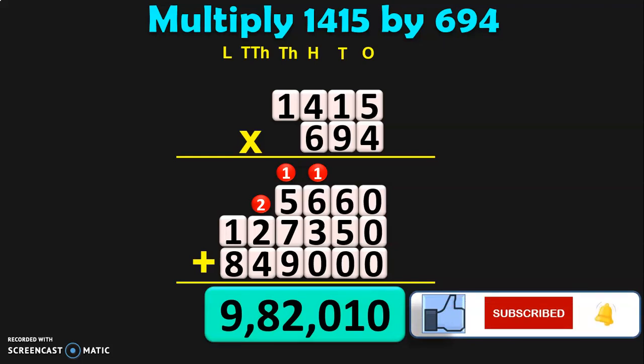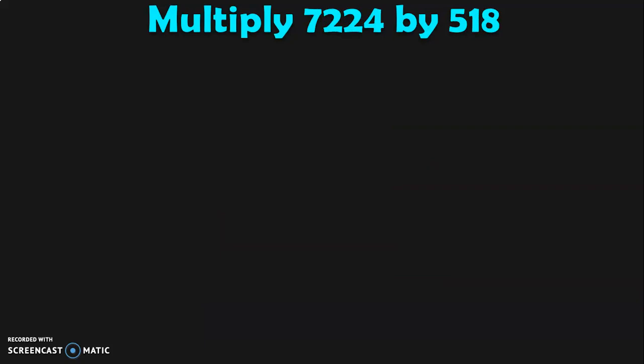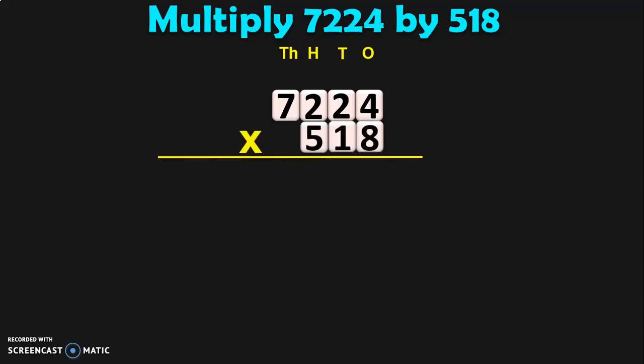Dear viewers, hope you are clear on how to do a 4-digit number by 3-digit number multiplication. Stay with me till the end of this video as we are going to do a few more sums which are going to give you answers in 7 digits. Till now, we saw the answer was in a 6-digit number — that is, up to the lakhs place. In the upcoming sums, we are going to deal with sums that give you the answer in 7 digits, involving the 10 lakhs place value.